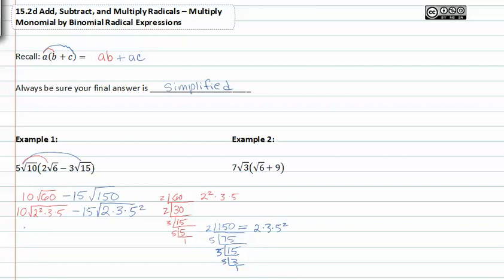So we'll go ahead and rewrite that one fifty with the prime factors in its place. Now I'm going to rewrite this, pulling out the factors that we can. So I'm going to have ten times two root three times five which is fifteen.